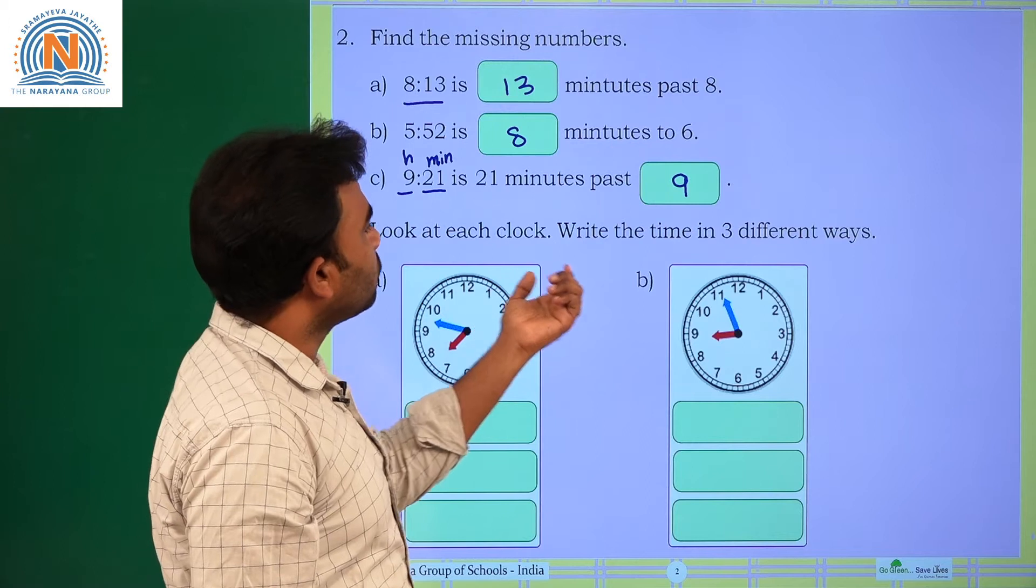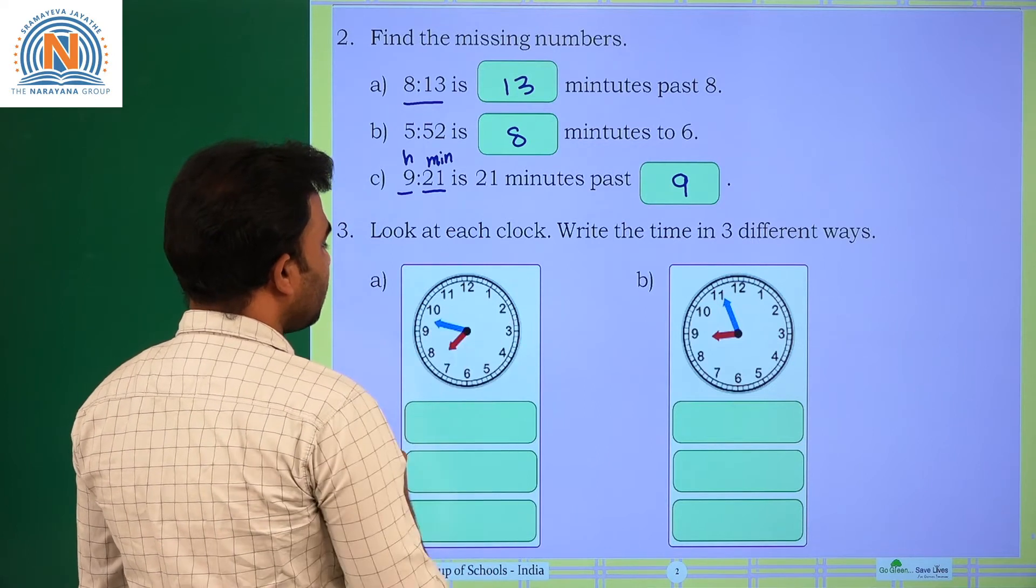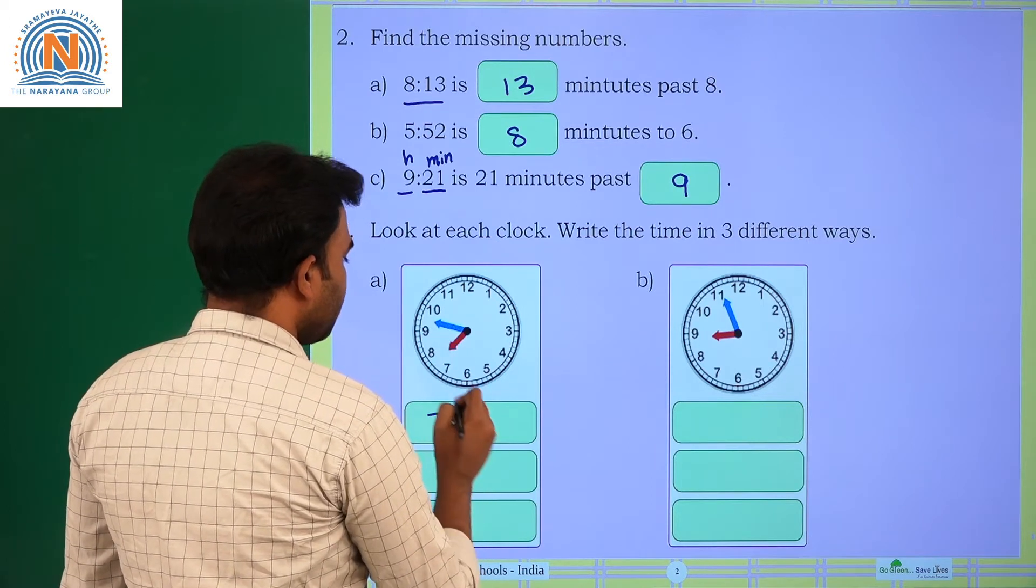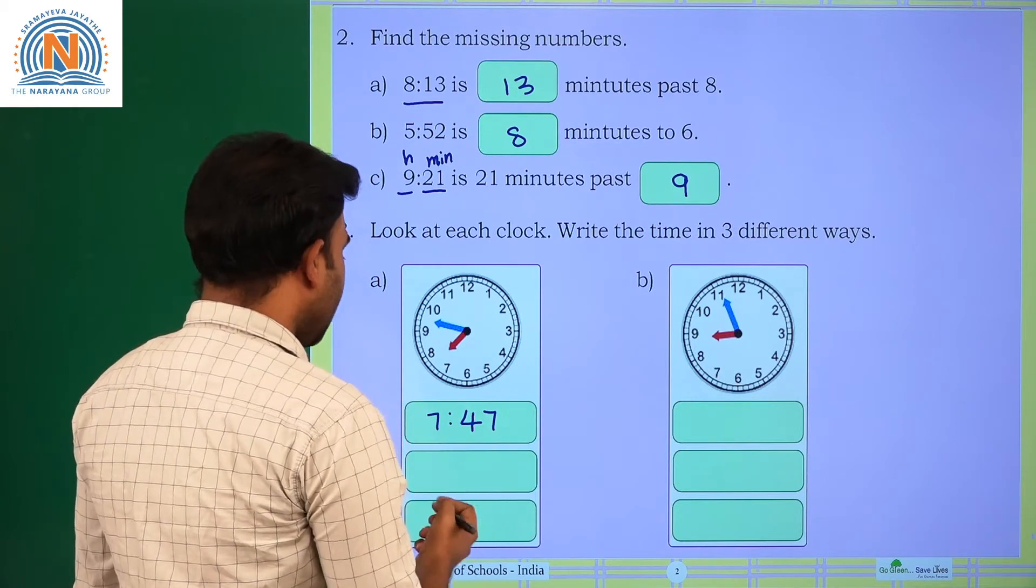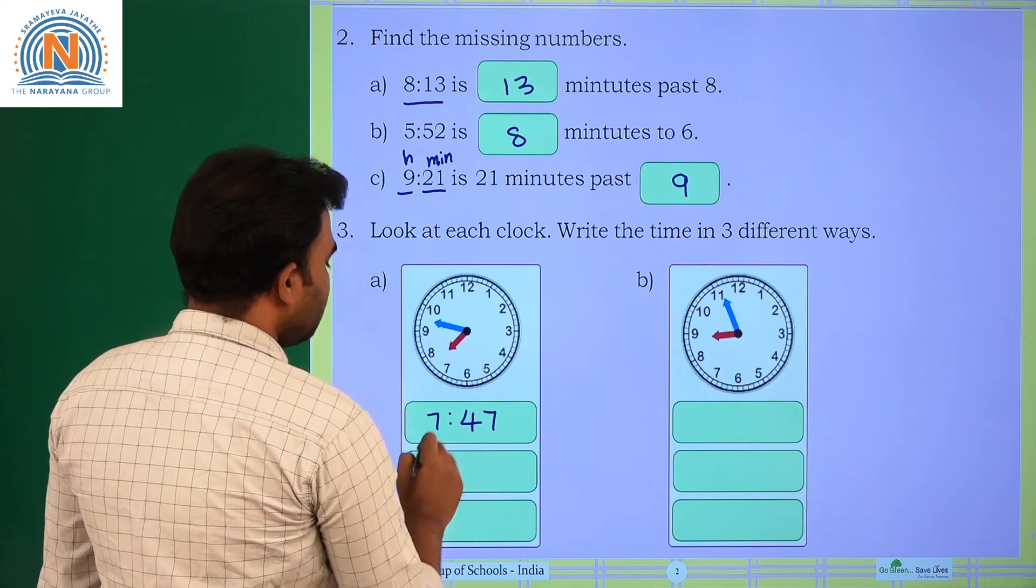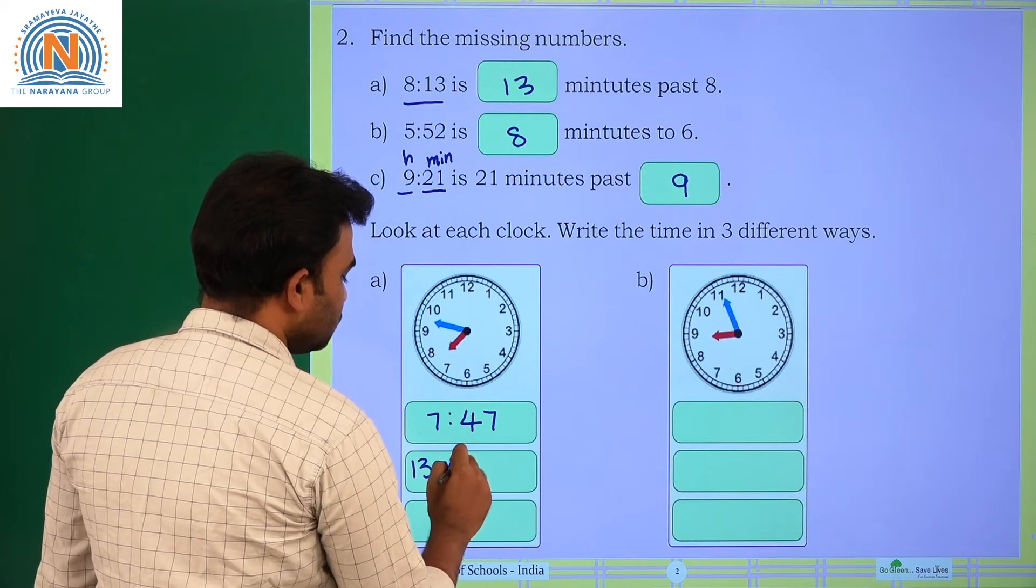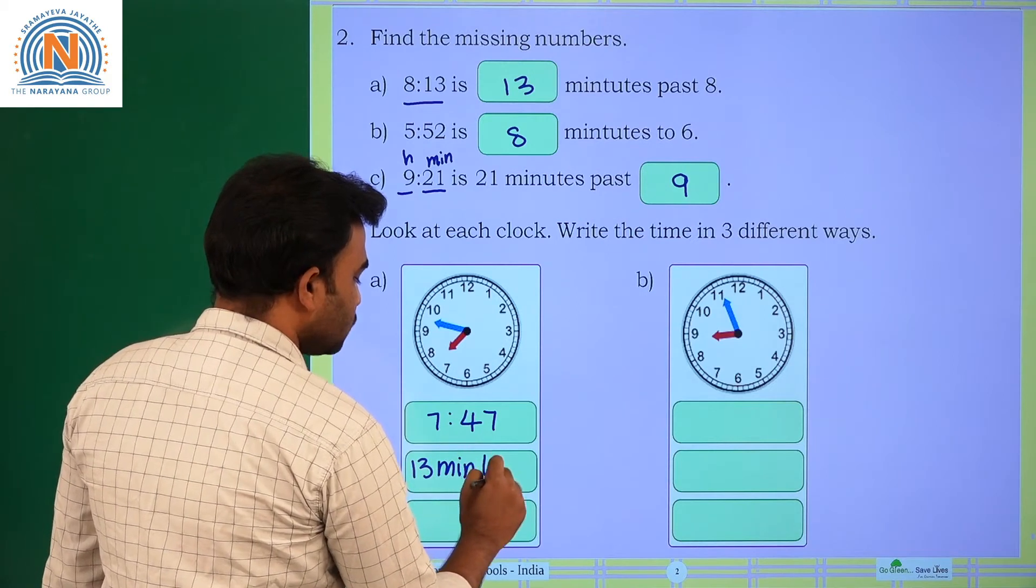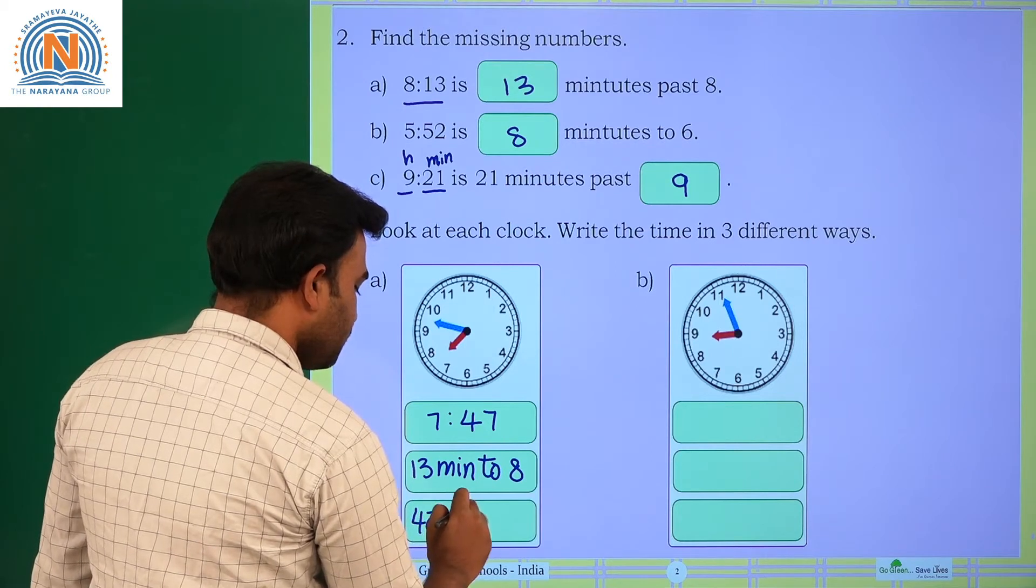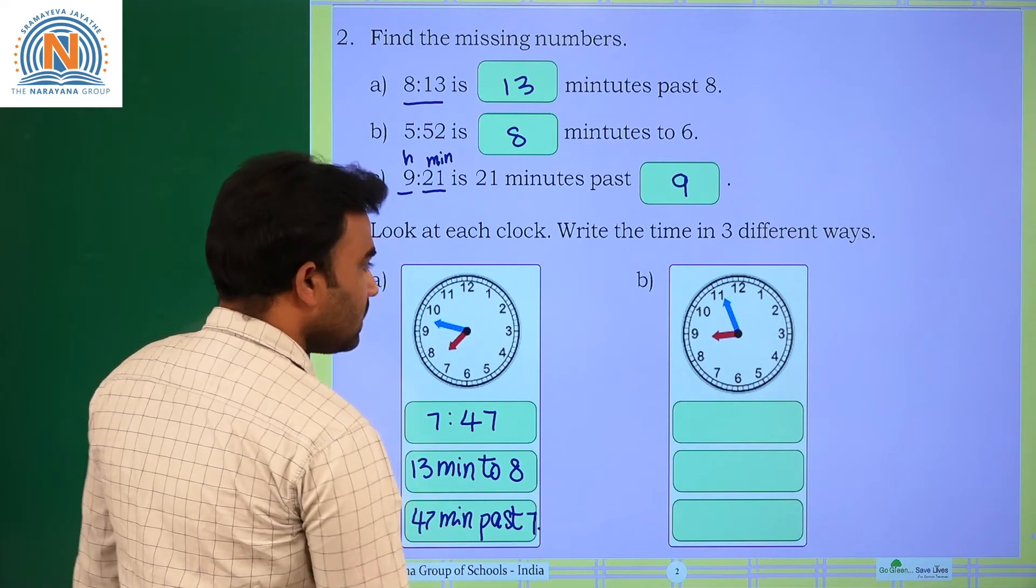Next one, look at each clock. Write the time in 3 different ways. What is the time here? It is just nearby 7:47. That can be written as, there are 13 minutes to get to 8. So, 13 minutes to 8, or 47 minutes past 7.